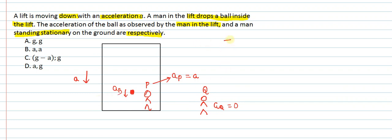What we need to find out from this scenario: we need to find out the acceleration of the ball with respect to observer P, and the acceleration of the ball with respect to observer Q.